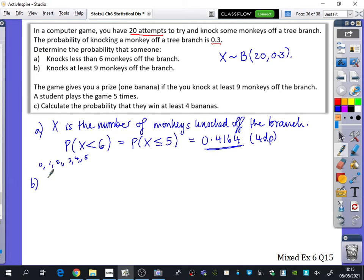Part B. No, you don't need to write that. The probability that you knock at least 9 monkeys off the branch. What symbol needs to go in between here? At least 9. So we're saying they could knock off 9 monkeys, 10, 11. No.